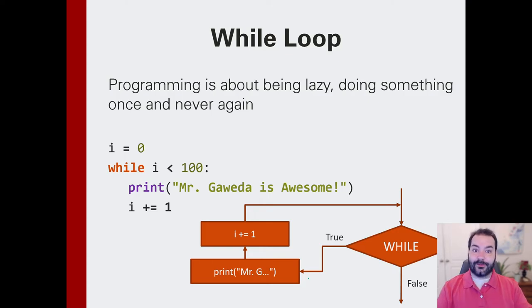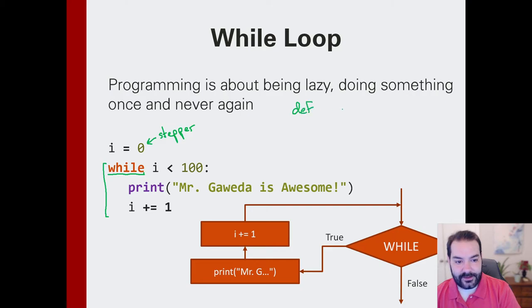And so, here is effectively how to solve that homework assignment without making 100 lines. The entire idea is we can imagine that this i variable is something known as a stepper. The sole job of this variable is to effectively keep track of how many times we've printed Mr. Gaweda is awesome. And so, as you can see, then we get into the while loop. This first little portion here is the keyword. Just like when we were looking at functions we had def, and when we were looking at conditionals we had if, loops are very same. They have while.